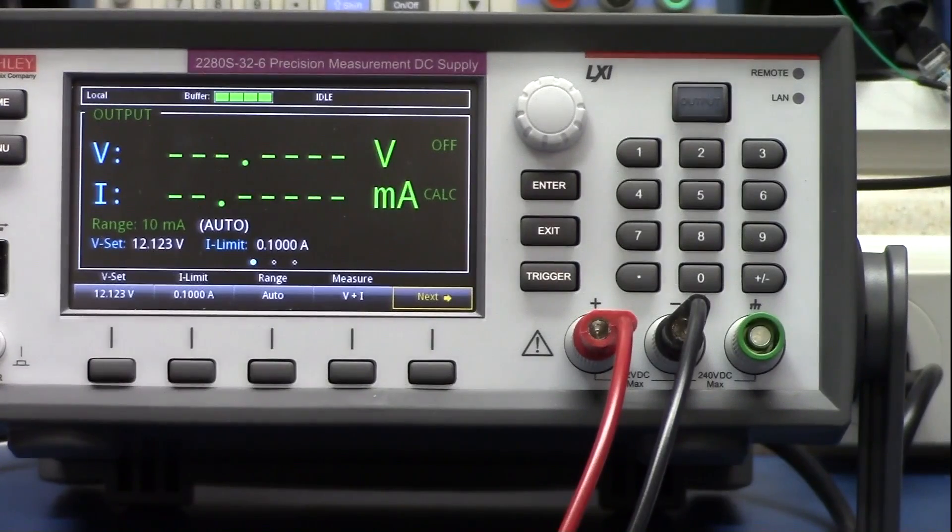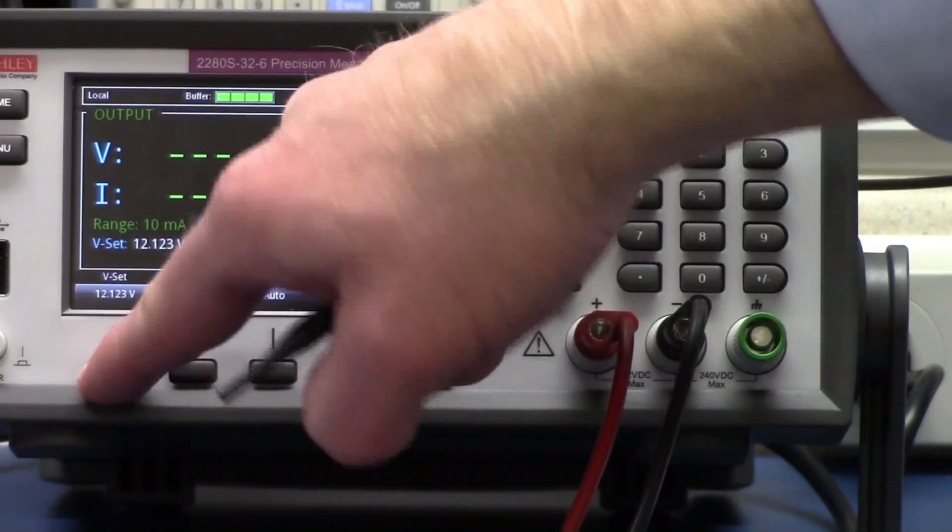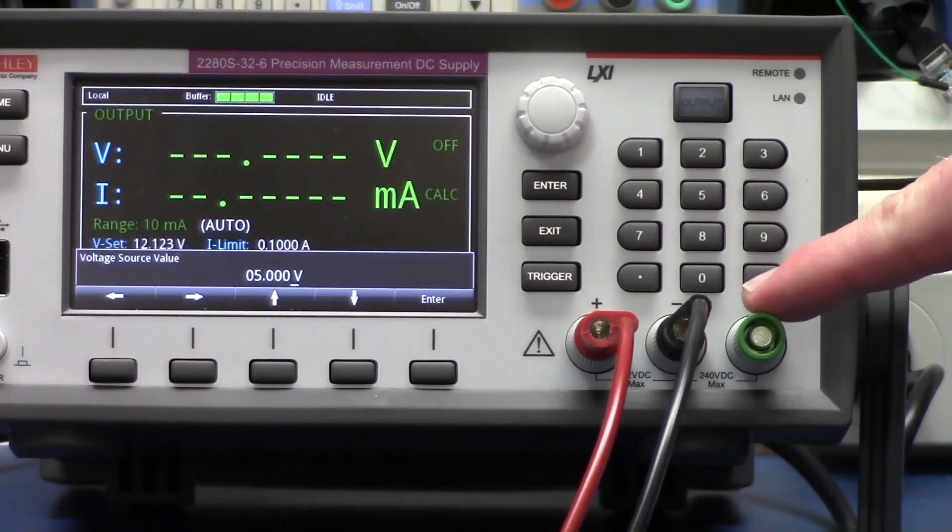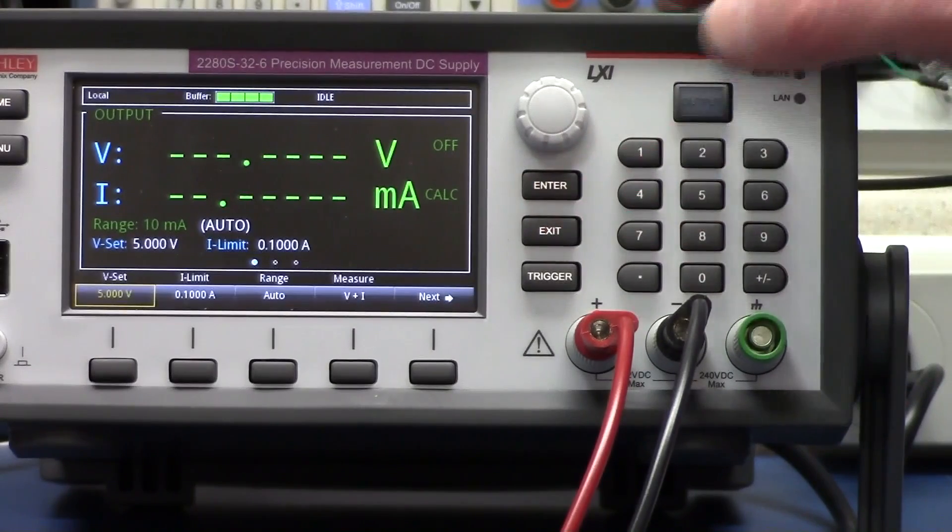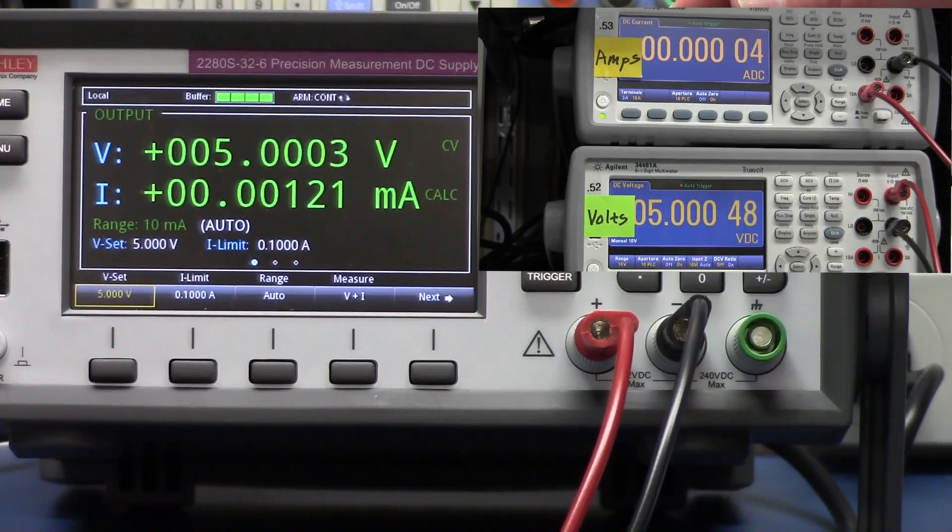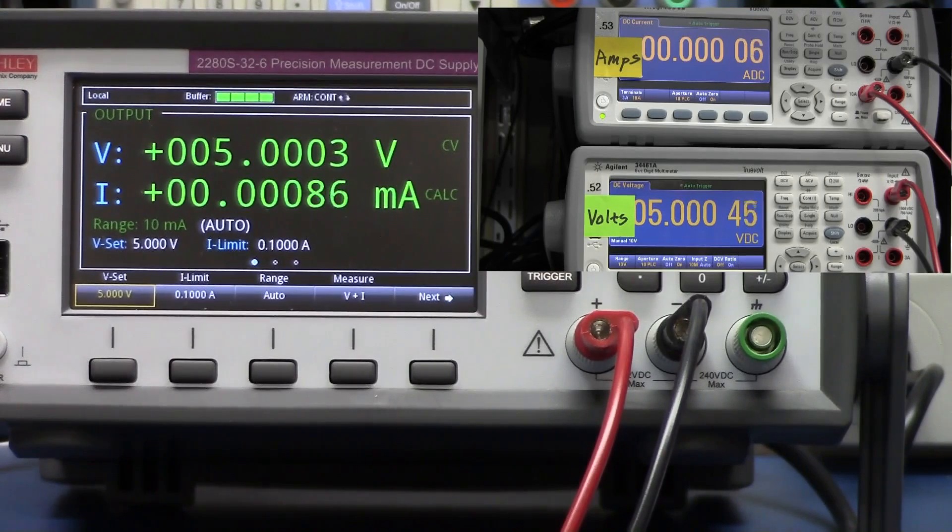So let's try it out. Let's program a voltage, and we'll watch and see how close it is. Let's program in a simple 5 volts. And see what we get. Let's turn it on. It is measuring 5003, so 0.3 millivolts high. And that is measuring 0.4 millivolts high. So pretty close. I think we're within the number of counts on the range spec.